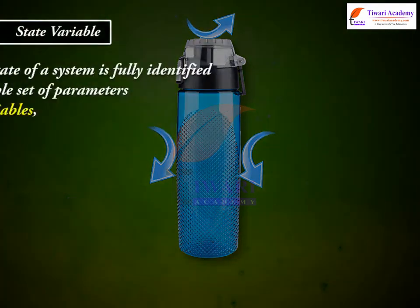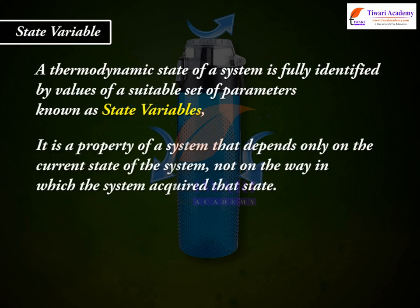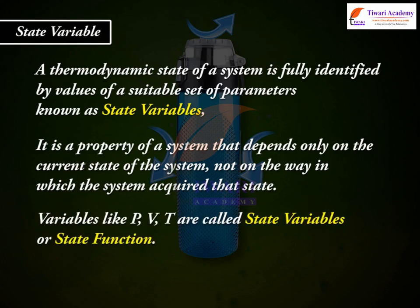State variable: a thermodynamic state of a system is fully identified by values of a suitable set of parameters known as state variables. It is a property of a system that depends only on the current state of the system, not on the way in which the system acquired that state. Variables like P, V, and T are called state variables or state functions.